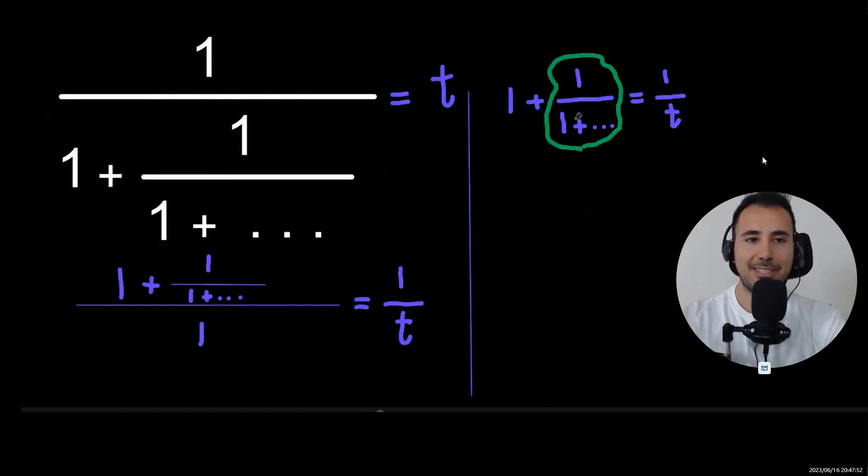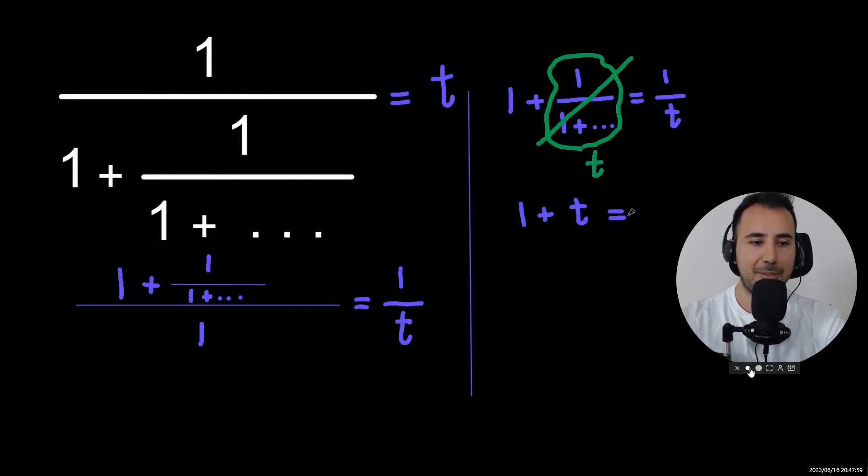So let's multiply both sides by T and then move one to the left hand side. Then that's our quadratic equation.